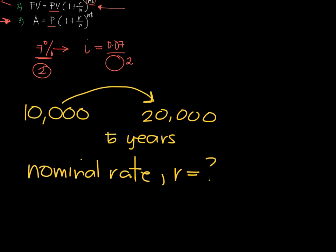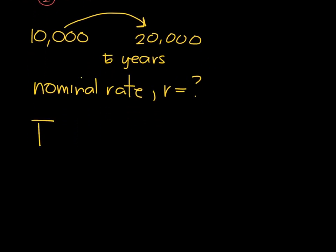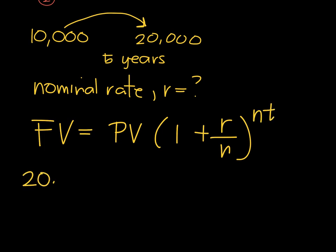Pick the formula: future value equals present value times 1 plus R over N raised to NT. I'll place the values given in the problem - that's 20,000 for FV, 10,000 for PV, you have 1 plus R, and N is the number of times it is compounded.